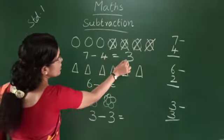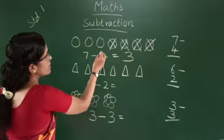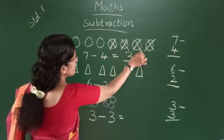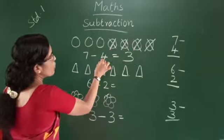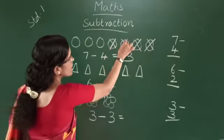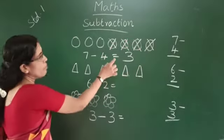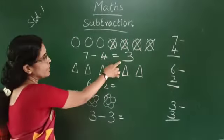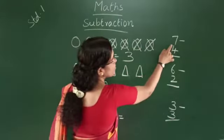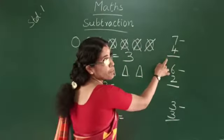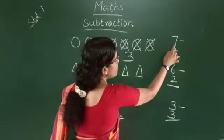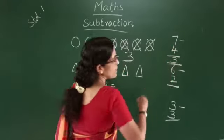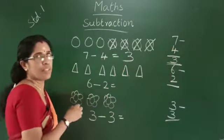7 minus 4 is equal to 3. So that is 7 circles, and 4 circles are crossed out. The remaining 3 circles are circled. 7 minus 4 is equal to 3. Ok?